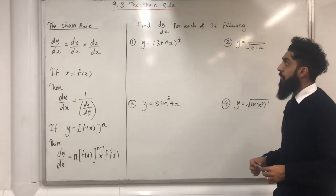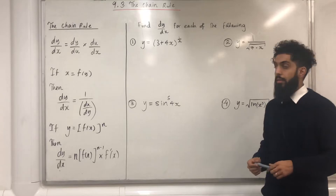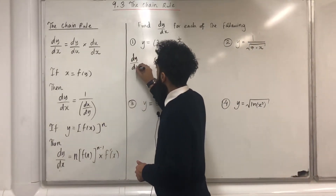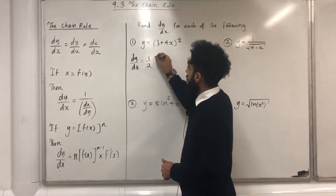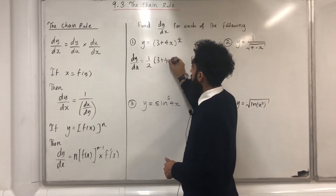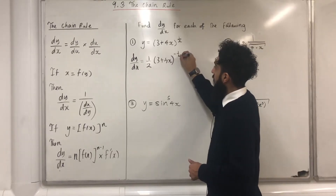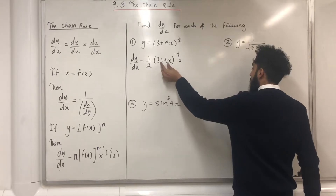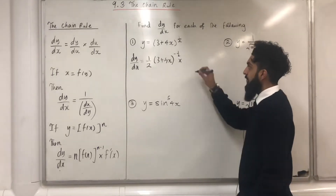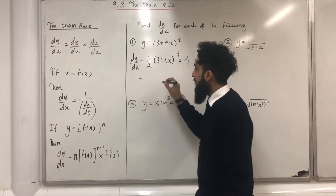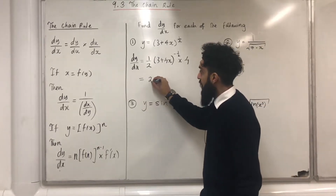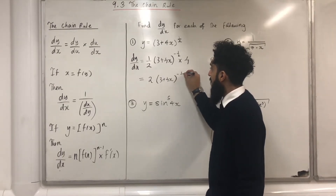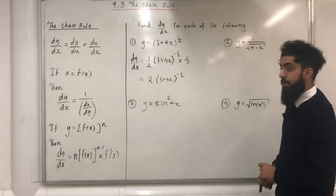We've got y equal to (3 plus 4x) to the power of one half. To find dy over dx, you bring down the power of one half, subtract 1 from the power giving minus one half, multiplied by the derivative of what you have inside the bracket. The differential of 3 plus 4x is just 4. Simplifying: one half times 4 is 2, giving 2(3 plus 4x) to the power minus one half.